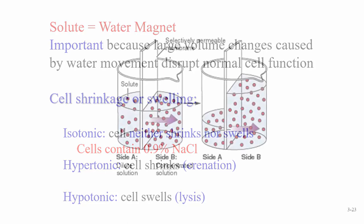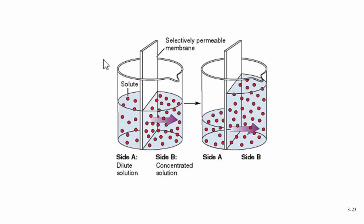Looking at it graphically: here we have our semi-permeable or selectively permeable membrane representing the cell membrane. On one side there are fewer solutes, on the other side more water magnets or solutes. Water is pulled through that selectively permeable membrane — it holds back the solutes — causing one side to become more concentrated and the other more dilute until they reach equal percentages of solutes. This process stops when equilibrium is reached.